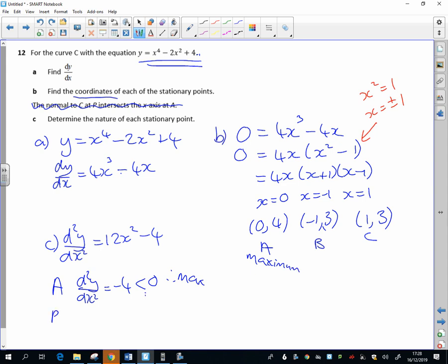At B, the value of x is minus 1, so that's going to be - well, minus 1 squared is just 1 - so that's going to be 12 minus 4, so 8, which is greater than 0. So that's a minimum.